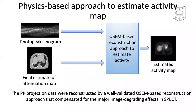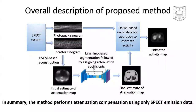Next, the photopeak sinogram data and this final estimate of the attenuation map are input to an OSEM-based reconstruction approach to estimate the activity map. This approach compensates for attenuation using the provided attenuation map. Additionally, this method also compensates for scatter, collimator-detector response, and noise. In summary, the method performs attenuation compensation using only SPECT emission data and without requiring any separate transmission scans.